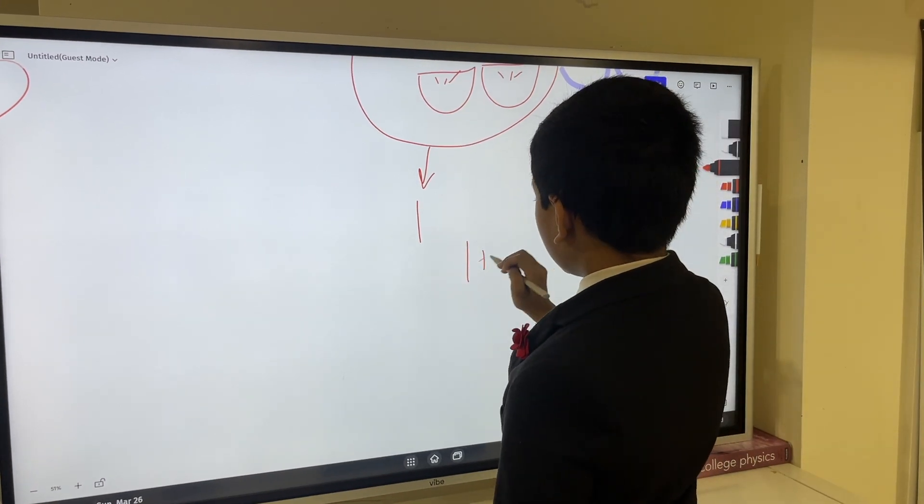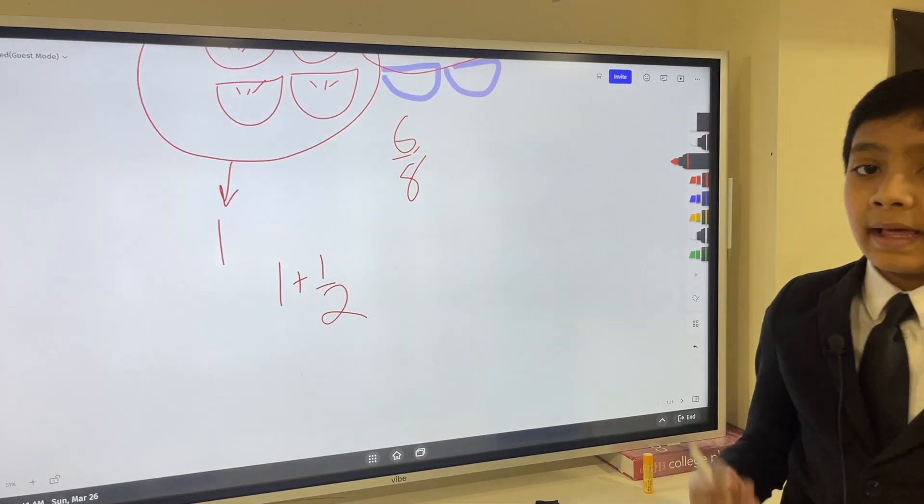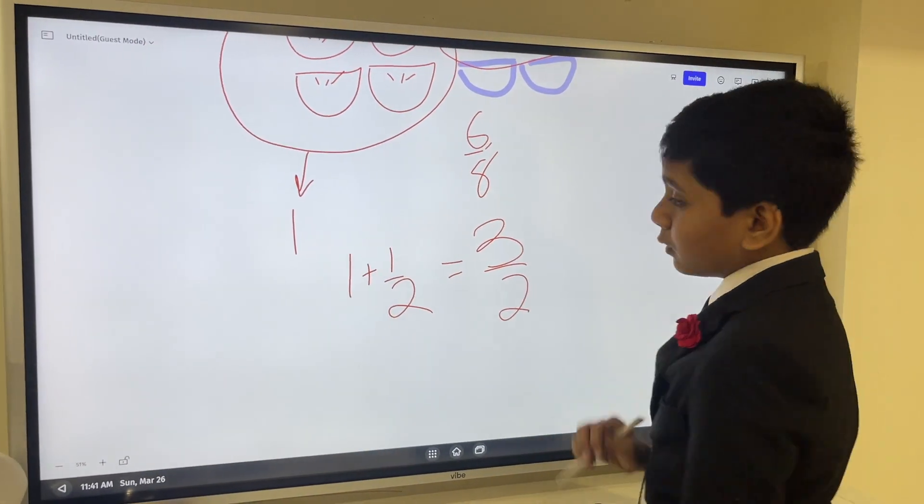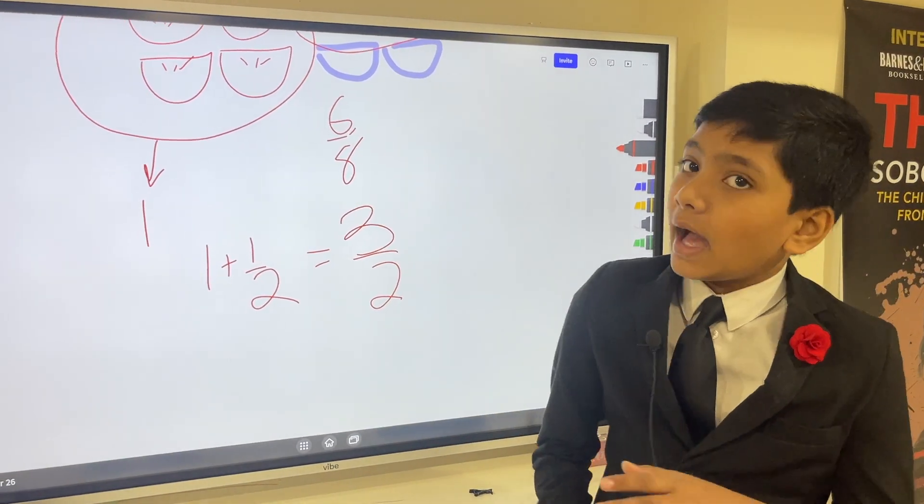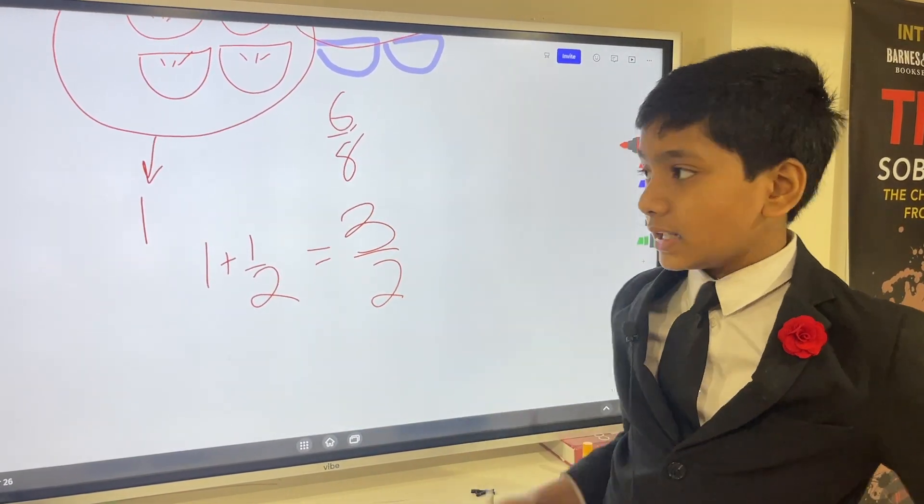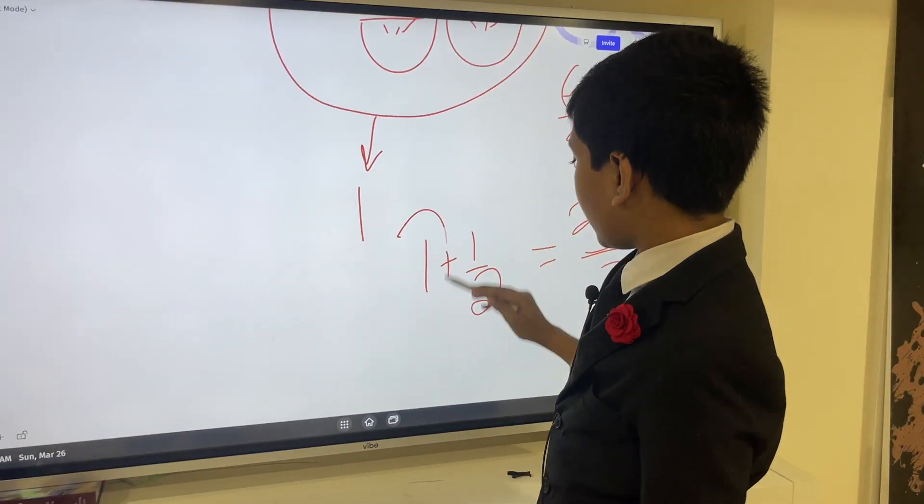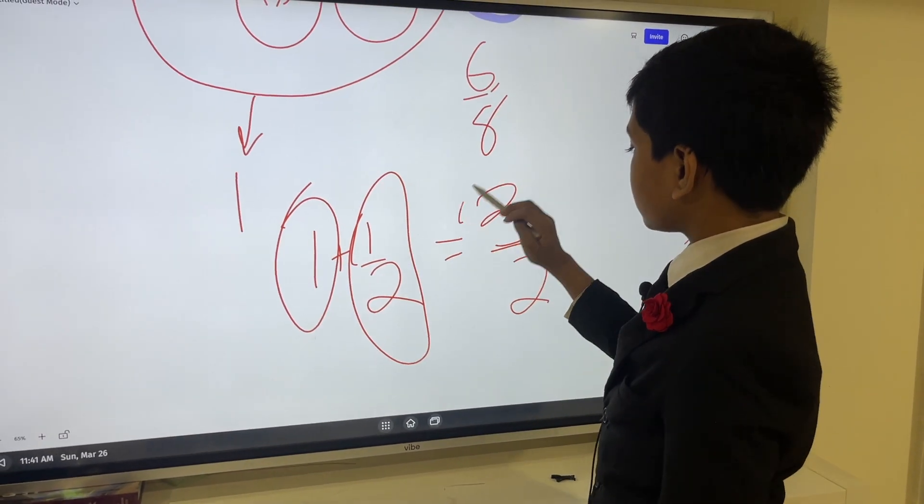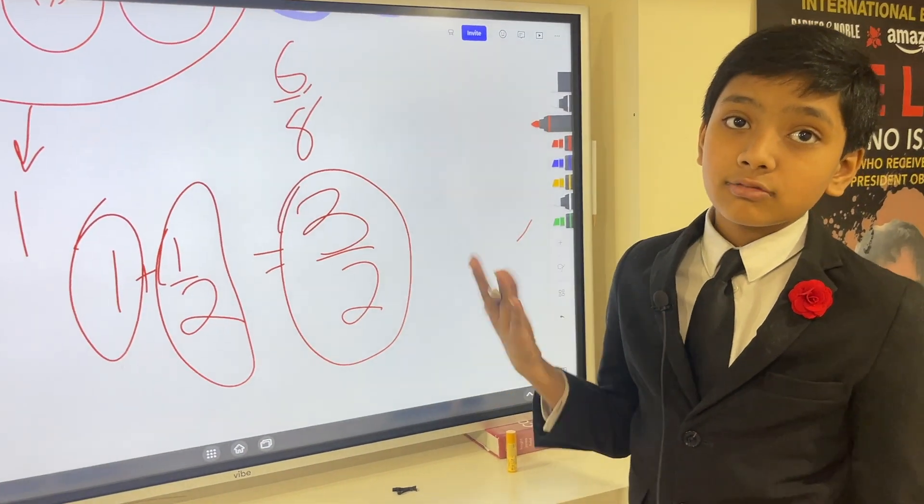So, that means we have one and a half apples, or what we could use to make an improper fraction: three over two apples. Now, that might not make sense. How do you get three apples from two apples? But that's not what we're talking about here. Since we have one apple and a half of an apple, adding those together makes three halves of an apple. Now, how does that work?